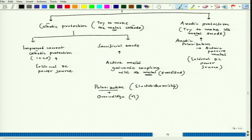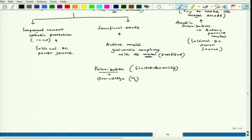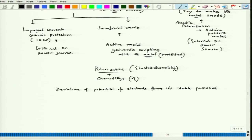By simple definition, polarization is the deviation of the potential of an electrode from its stable potential — in other words, the change in potential from the stable potential. We also need to understand what this stable potential means. When we try to understand the potential of the electrode, we talk about the reaction taking place on the electrode.